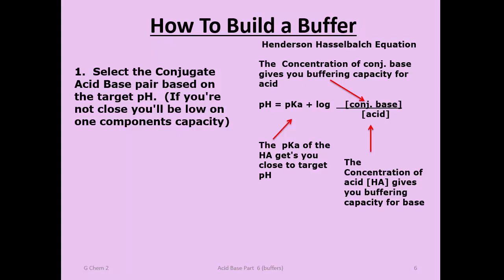Select the conjugate acid-base pair based on the target pH. If you're not close, you'll end up low on capacity. If you chose a pKa at least one pH unit away, the ratio of conjugate base to acid must be ten-to-one to move one pH unit, meaning one component has a low capacity—for example, a one molar capacity on the acid end but only a tenth of a molar conjugate base concentration to combat incoming acid. The rule of thumb is the pKa should be within at least one pH unit of the pH target.